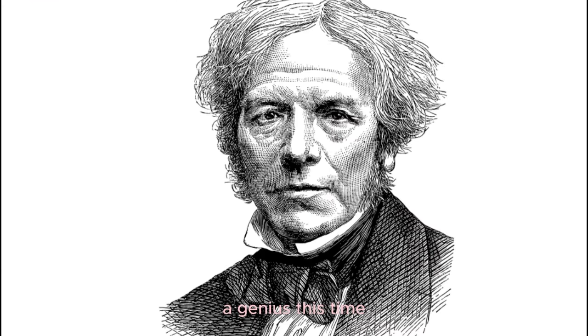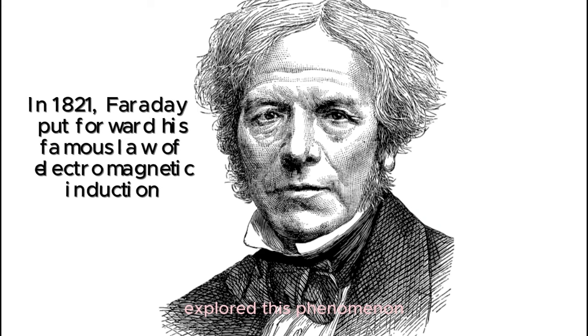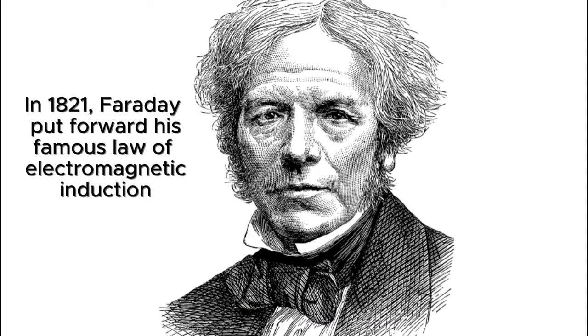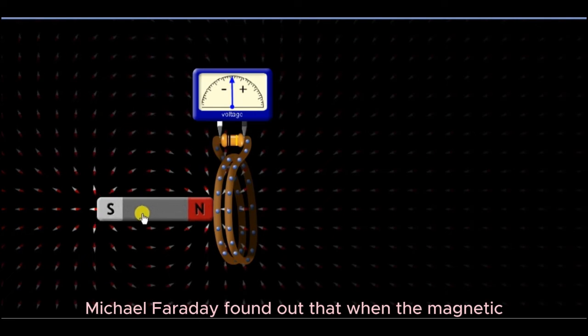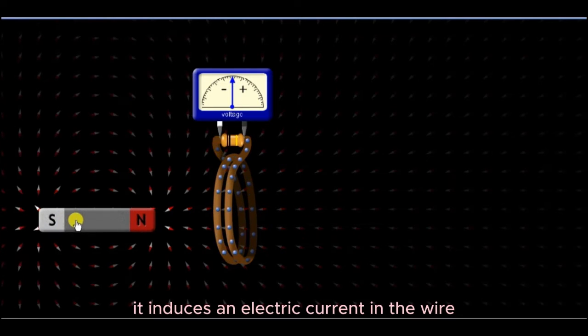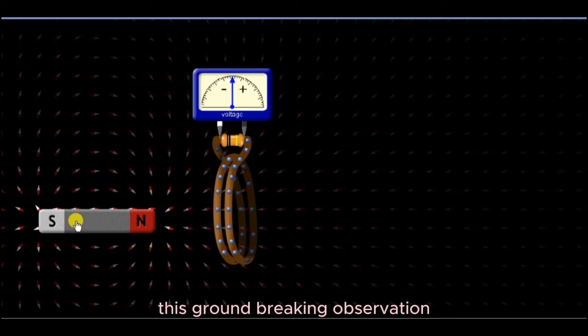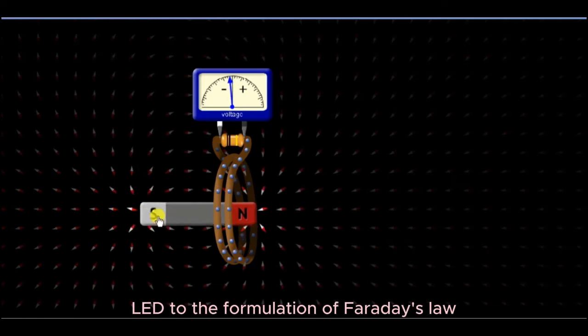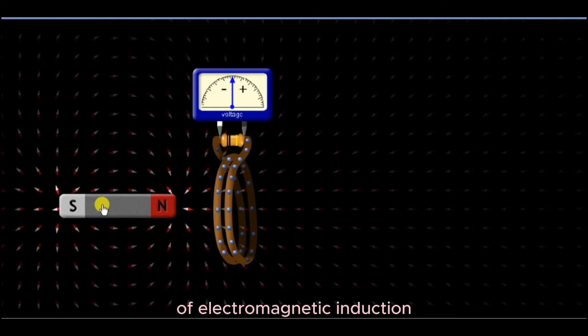Michael Faraday, a genius of his time, explored this phenomenon for the first time. Michael Faraday found out that when the magnetic field around the coil changes, it induces an electric current in the wire. This groundbreaking observation led to the formulation of Faraday's law of electromagnetic induction.